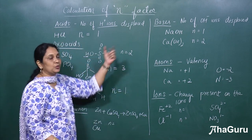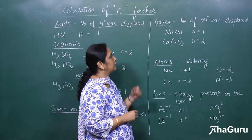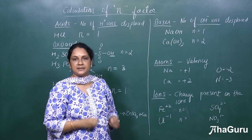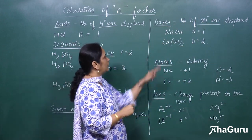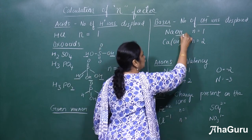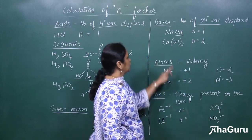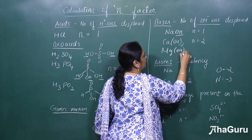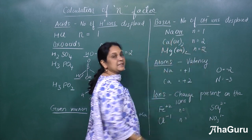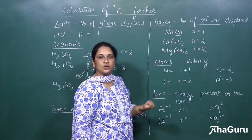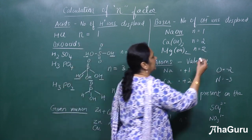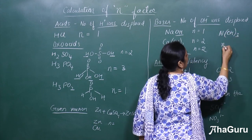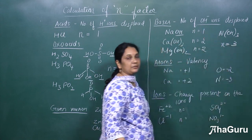Now let us move on to bases. For bases, the N factor is the number of OH⁻ ions displaced. For sodium hydroxide, the OH group is 1, so N factor is 1. For calcium hydroxide or magnesium hydroxide, the number of replaceable OH⁻ ions is 2, so N factor is 2. For aluminium hydroxide Al(OH)₃, the N factor is 3.